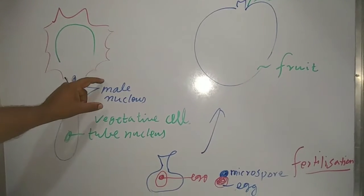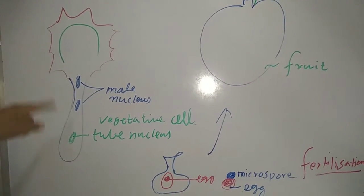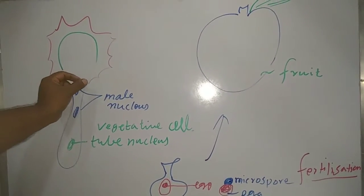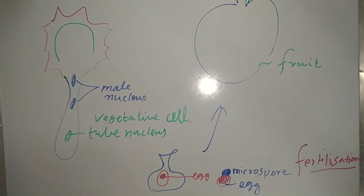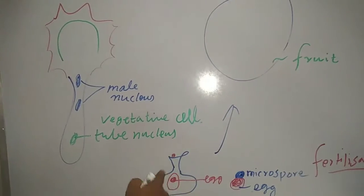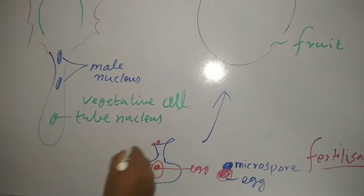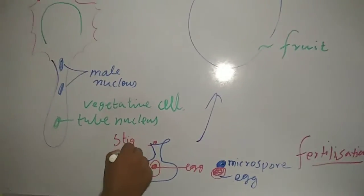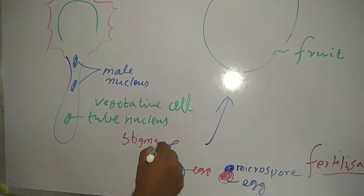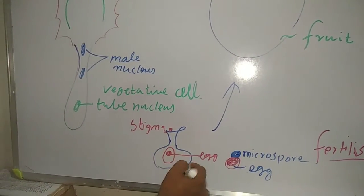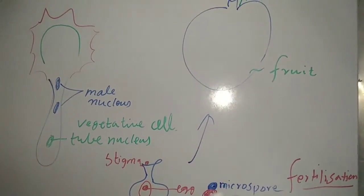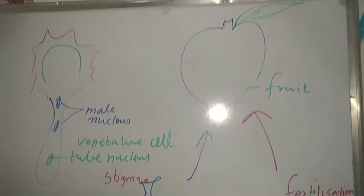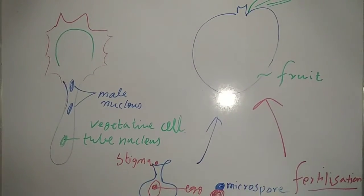The generative cell forms two male nuclei. When the germ pore bursts and releases the microspores, fusion with the stigma, that is the stigma part in female parts. Then after you enter, the fusion with the egg, the microspore and egg. The process is known as fertilization. After fertilization will form the beautiful fruits.